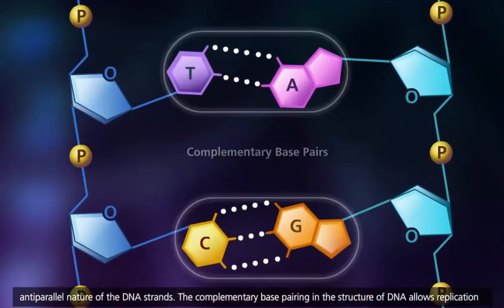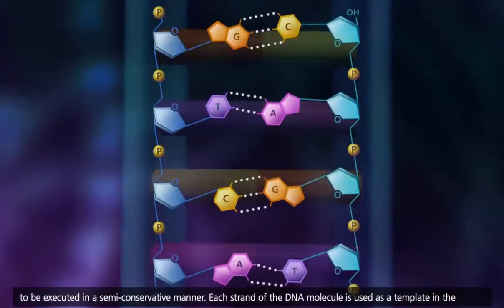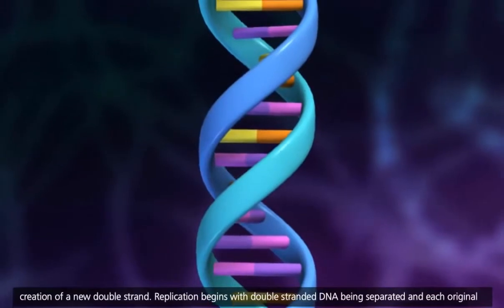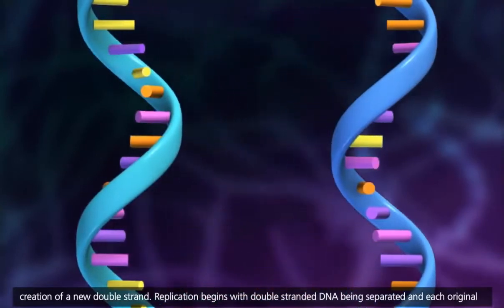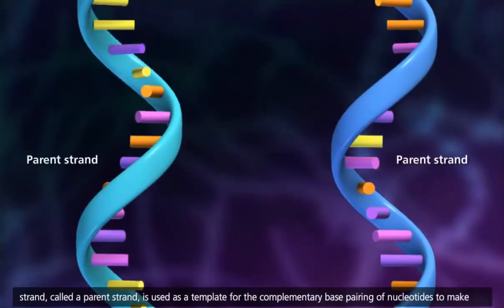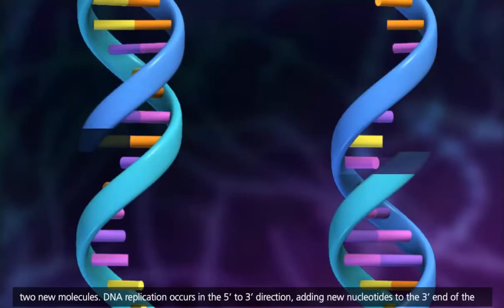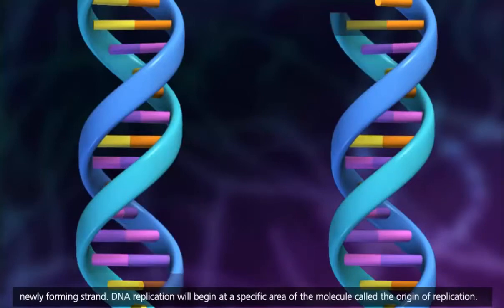The complementary base pairing in the structure of DNA allows replication to be executed in a semi-conservative manner. Each strand of the DNA molecule is used as a template in the creation of a new double strand. Replication begins with double-stranded DNA being separated, and each original strand, called a parent strand, is used as a template for the complementary base pairing of nucleotides to make two new molecules. DNA replication occurs in the 5' to 3' direction, adding new nucleotides to the 3' end of the newly forming strand.